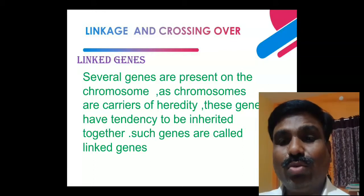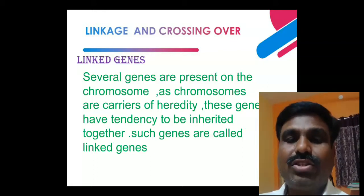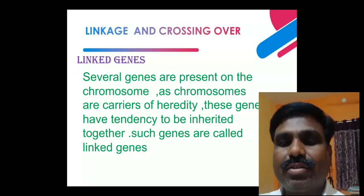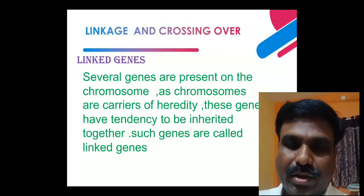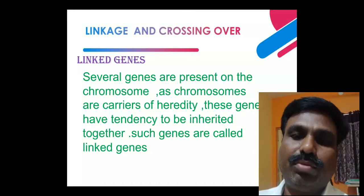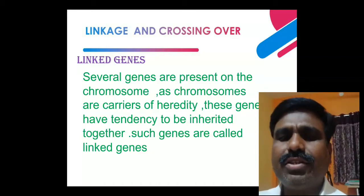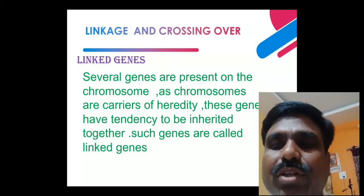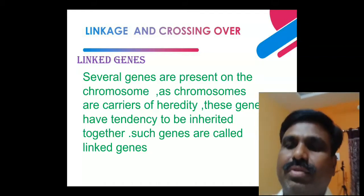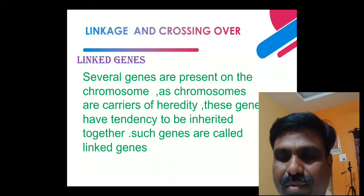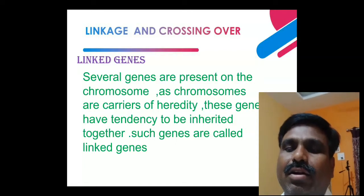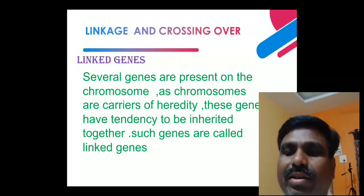Several genes are present on the chromosomes. These genes — for color of eyes, hair pattern, shape of the nose — are different genes present on the chromosomes which are inherited. Chromosomes are the carriers of genes and hereditary materials. These genes have a tendency to be inherited together along with chromosomes and express a character.